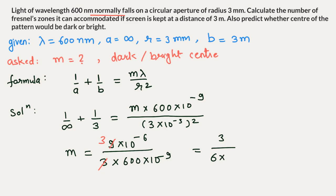Simplifying: m = 9×10⁻⁶ divided by 1800×10⁻⁹, which equals 5. This is our answer. We have got the answer for the number of zones.